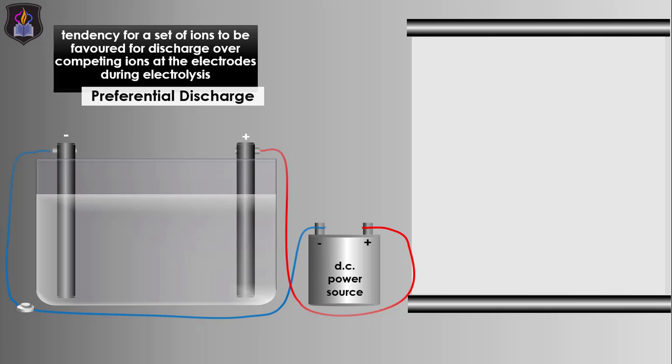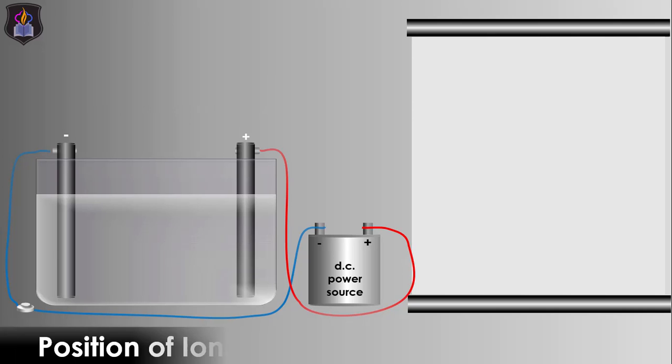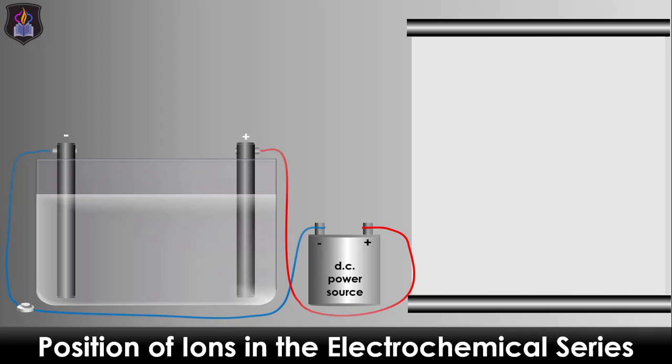The first factor to be considered is the relative position of ions in the electrochemical series. Here, ions lower in the series are preferentially discharged over the ones above them, all other factors remaining constant.